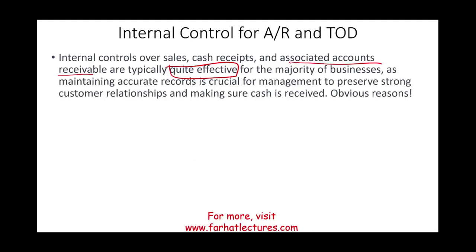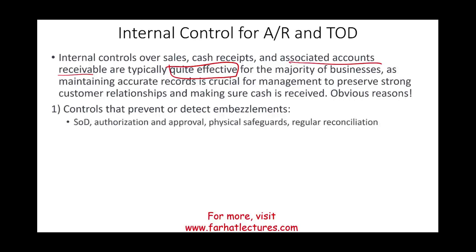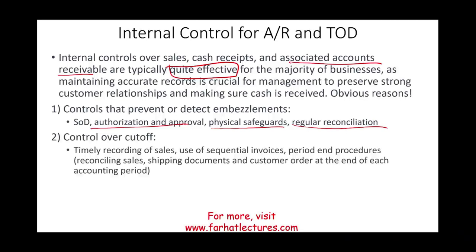Internal controls over receivables are concerned with three things. First, controls that prevent or detect embezzlement: segregation of duties, authorization and approval processes, physical safeguard of assets — which includes account receivable, the books, and the cash — and regular reconciliation between sales and receivables. Second, controls over cutoff: making sure AR is reported in the correct period, with timely recording using sequential invoices so that when the period ends they know the last invoice, and performing period-end procedures such as reconciling sales, shipping documents, and customer orders.